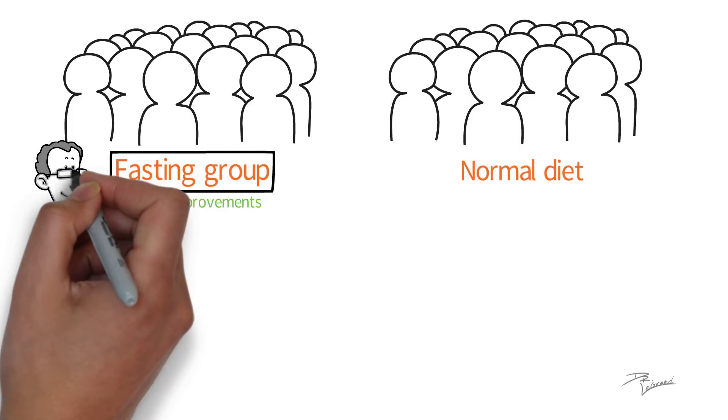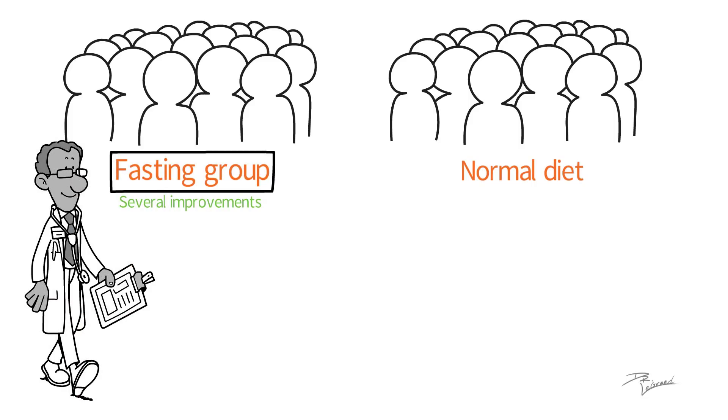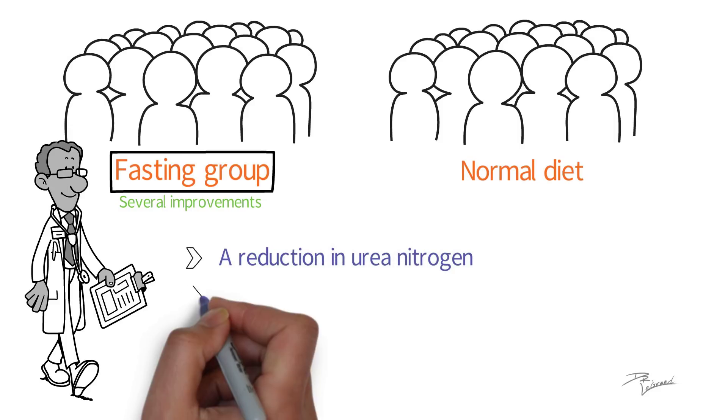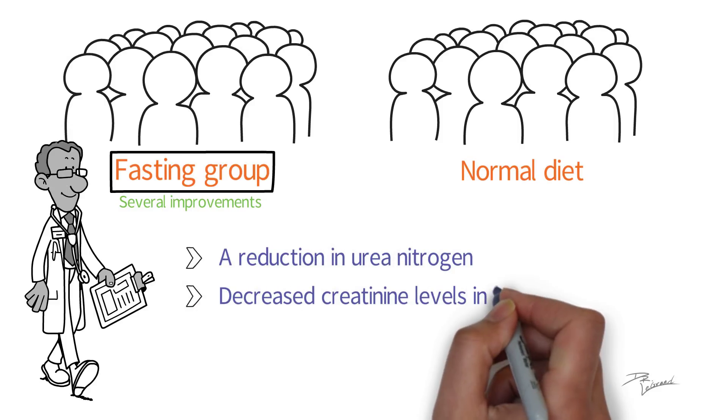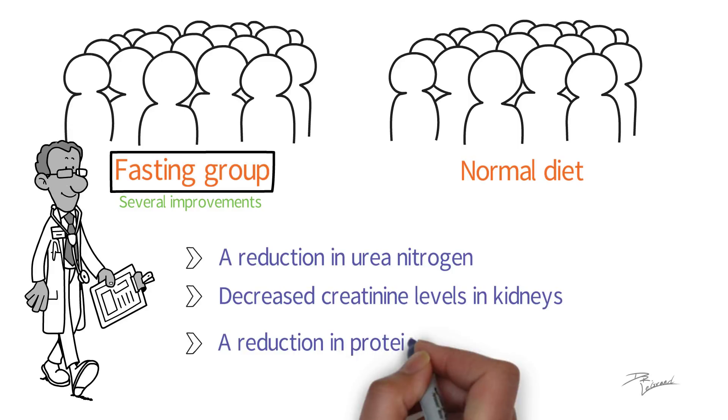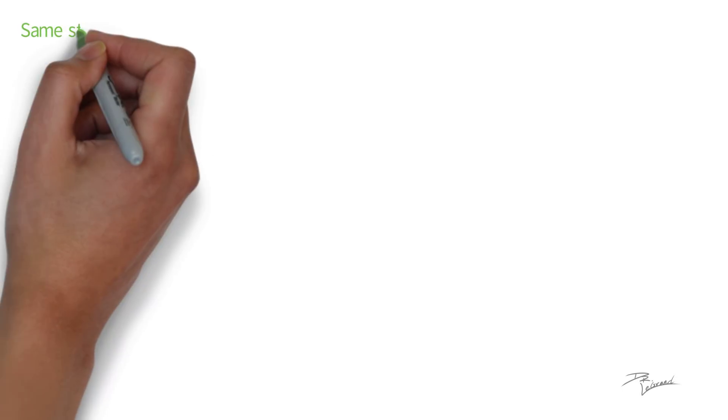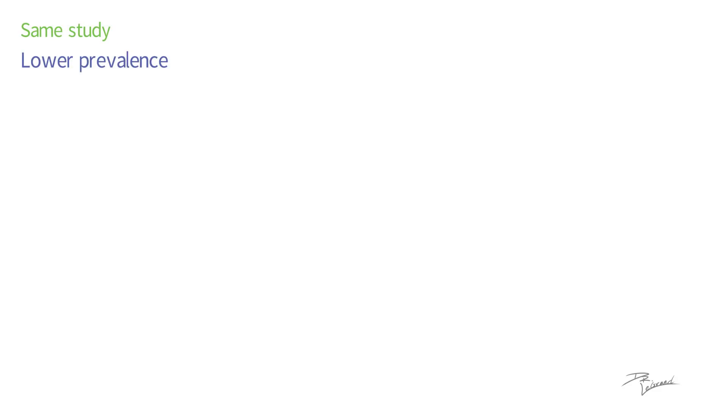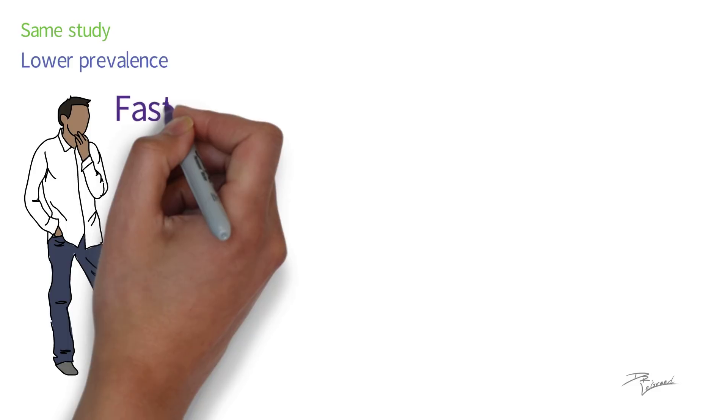Improvements noted by the scientists behind the study included a reduction in urea nitrogen, decreased creatinine levels in kidneys, a reduction in protein detected in urine samples. The same study also noted that there seems to be a lower prevalence of kidney diseases among people who practice fasting on a regular basis.